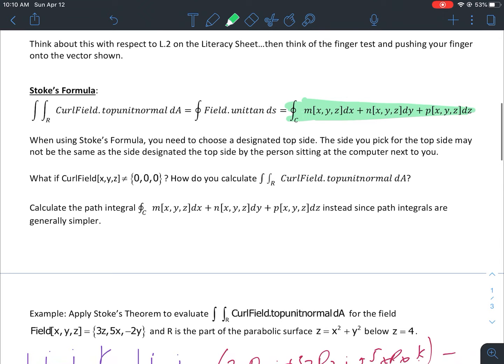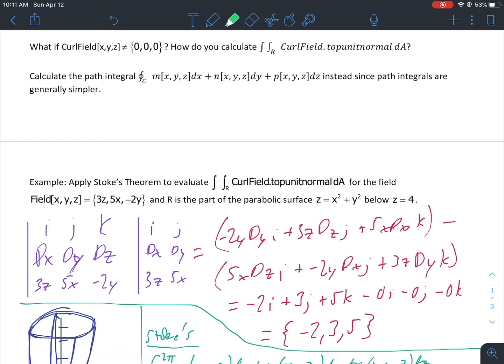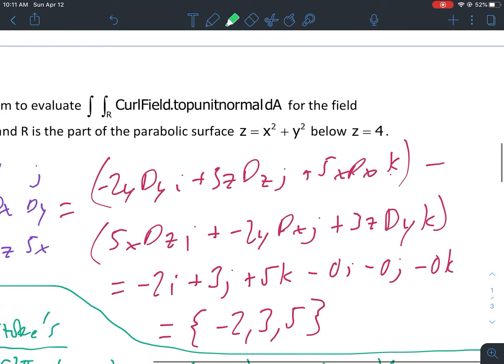We're doing an example of that on the next page. The example says to apply Stoke's theorem to evaluate that for this given field, and r is the part of the parabolic surface z equals x squared plus y squared and below z equals four. I started off here just by setting up my cross product to get my curl field there.